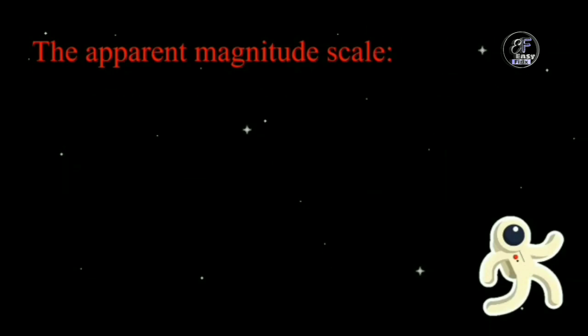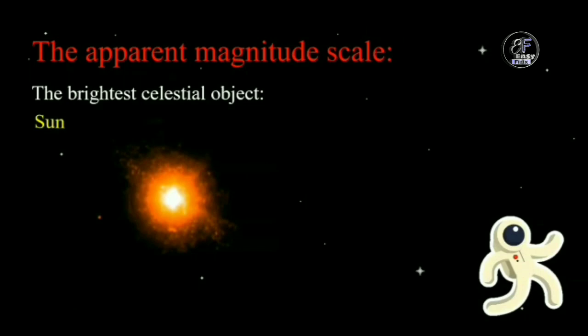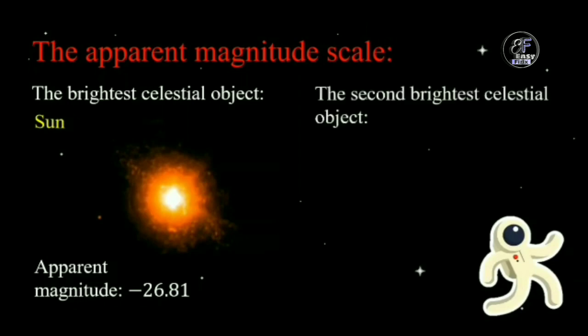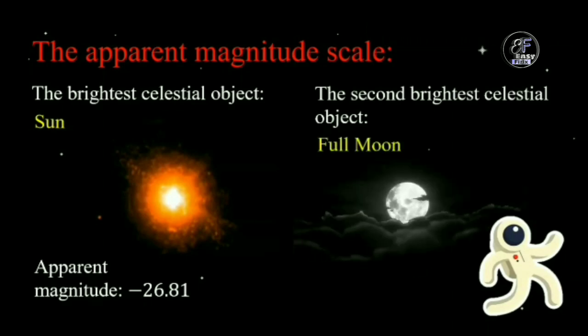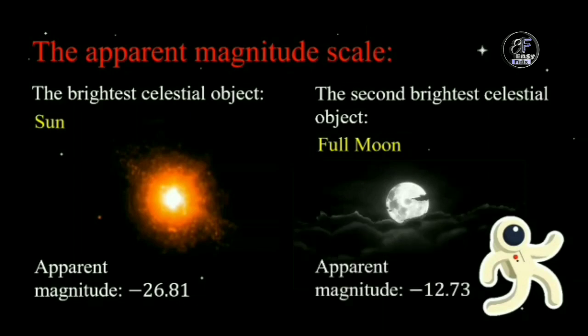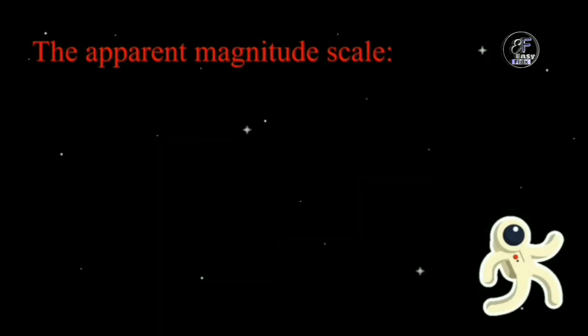The brightest object in the sky is the Sun, with an apparent magnitude of −26.81. The second brightest object is the Full Moon, with an apparent magnitude of −12.73. We can see the apparent magnitudes of more objects in the given table.